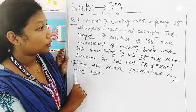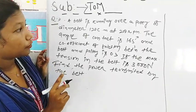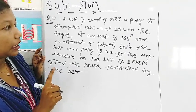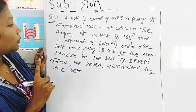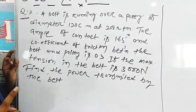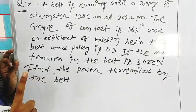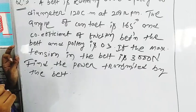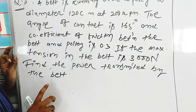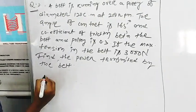So let's solve this problem. The problem is: a belt is running over a pulley of diameter 120 cm at 200 rpm. The angle of contact is 165 degrees and the coefficient of friction between the belt and the pulley is 0.3. If the maximum tension in the belt is 3000 N, then find the power transmitted by the belt.